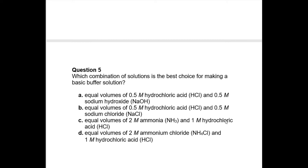Option D — equal volumes of two molar ammonium chloride and one molar hydrochloric acid — is out because HCl is a strong acid. Option C is correct: equal volumes of two molar ammonia and one molar HCl. All the HCl reacts with half the ammonia to form ammonium chloride. That ammonium chloride is mixed with the remaining excess ammonia, giving a mixture of ammonia and ammonium chloride — a basic buffer. Answer is C.